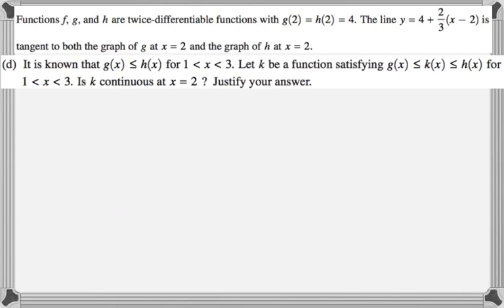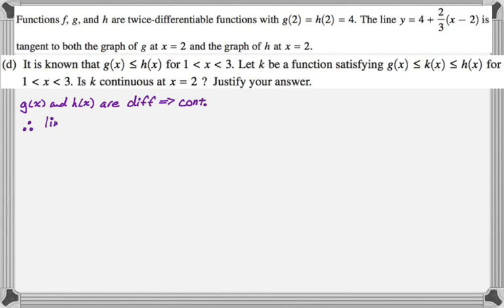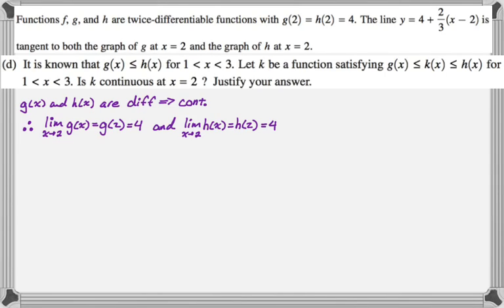Part d says g of x is less than k of x less than h of x for all x between one and three, and asks if k is continuous at x equals two. The initial impulse is that it almost definitely is, but we need a justification. Since g and h are differentiable, they're continuous, so the limit as x approaches two of g of x equals g of two equals four, and the limit as x approaches two of h of x equals h of two equals four.